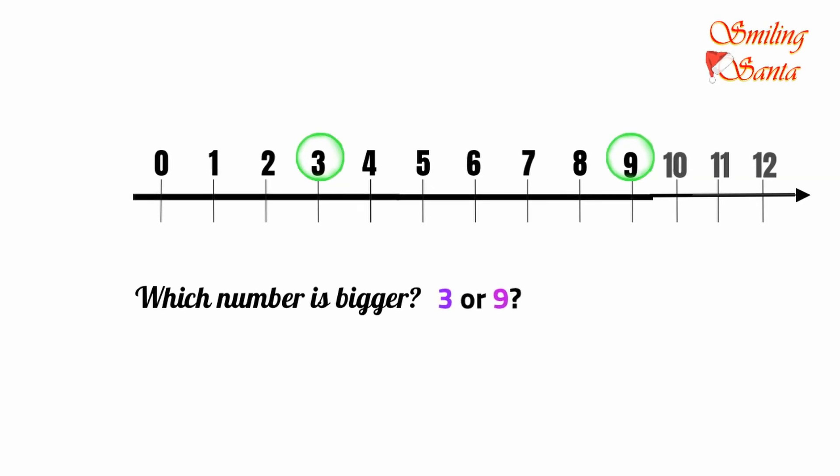Just locate the numbers 3 and 9 on the number line. We already know on the number line, a number to the right is greater or bigger than the number to the left. And a number to the left is smaller than a number to the right. Because we have placed the numbers on the number line one after the other as they come.